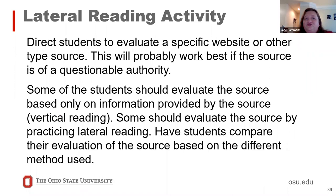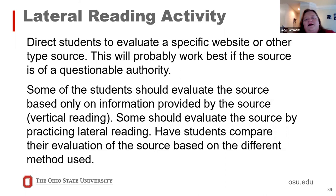A specific activity: divide students into groups and have some evaluate a specific source using vertical reading — staying on that source itself — then have other students evaluate the same source using lateral reading, and compare their responses. This works best if it's a questionable source, one you know already has not gotten great feedback — the lateral reading group will hopefully recognize problems with that source that the vertical reading group does not, because they stay on just that one source.